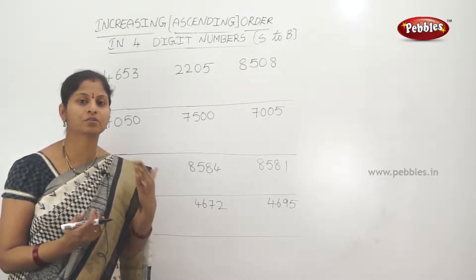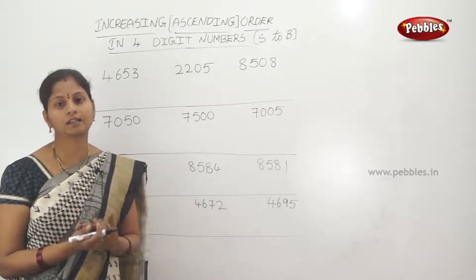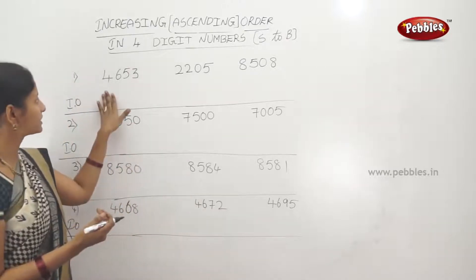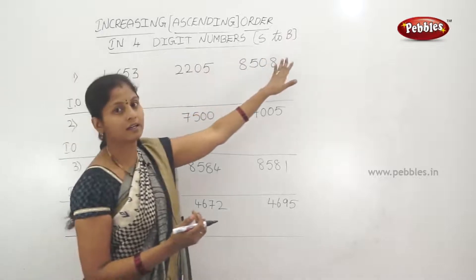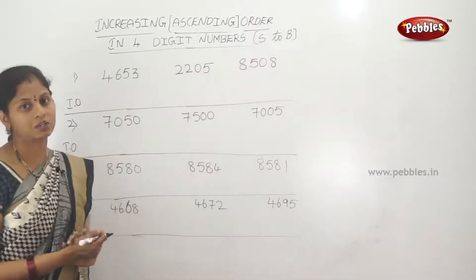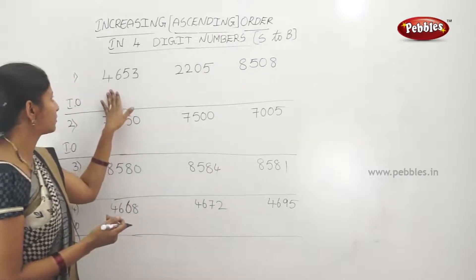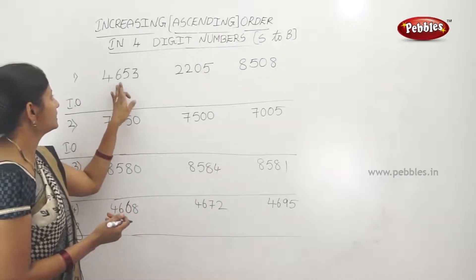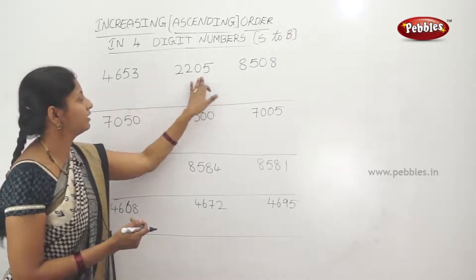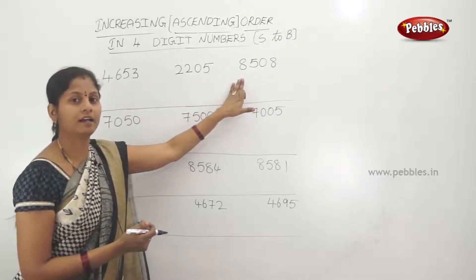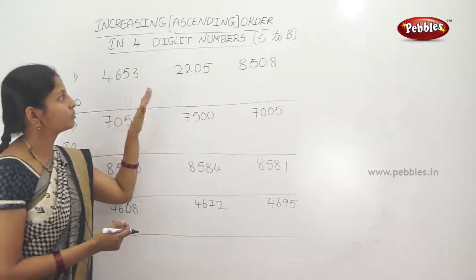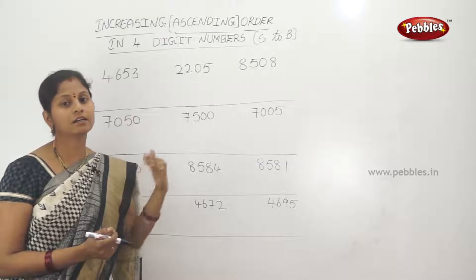When arranging 4-digit numbers in ascending order, we compare the starting digits from the smallest to the biggest. Here we have three 4-digit numbers: 4,653; 2,205; and 8,508. We will find the smallest number and the biggest number to arrange them in ascending order.